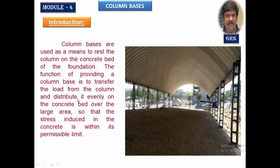Column bases are of two types. One is called a slab base and the other one is called a gazetted base. In this session, we will try to study about the design of bolted slab base.